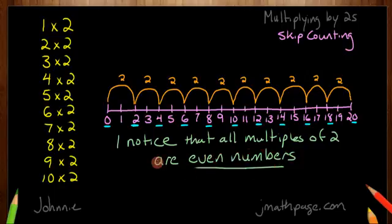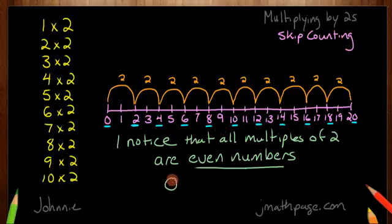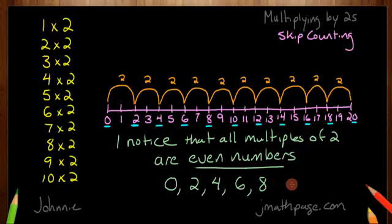Now, that's important. If I go back up here, I see I don't end up on 1 or 3 or 5 or 7 or 9. Those are all odd numbers. So when I'm thinking about my multiples of 2, they always have to end in 0, 2, 4, 6, or 8.